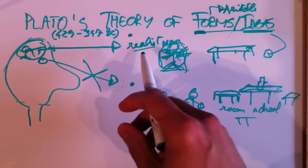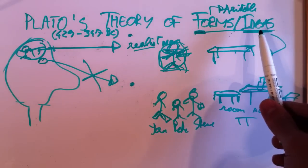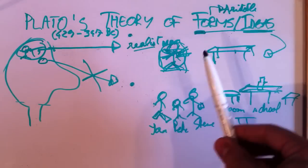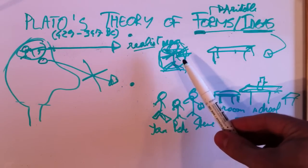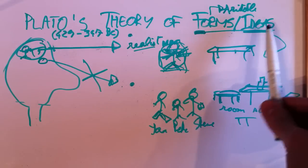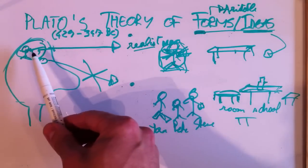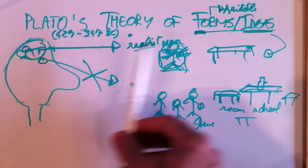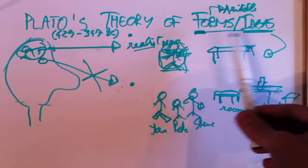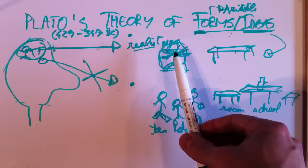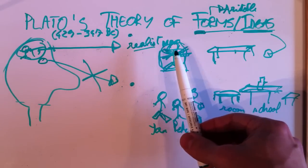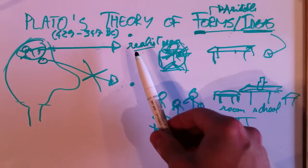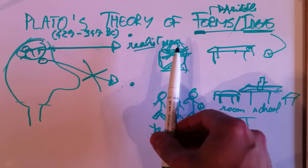People often are confused by the fact that he uses the term ideas to refer to these real universals. I mean, isn't it just ideas in our heads? No, it isn't. It's ideas with a big I and they exist in reality. And it's very important to realize when talking about Plato. So, Plato is a realist. Universals really exist.